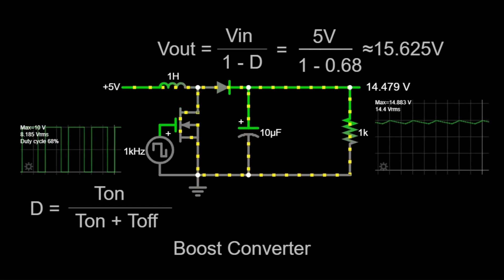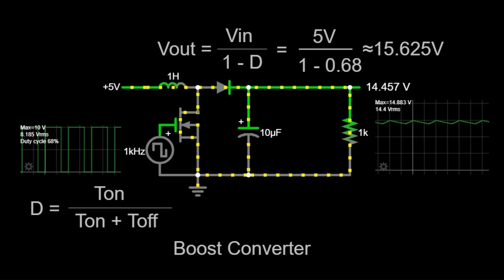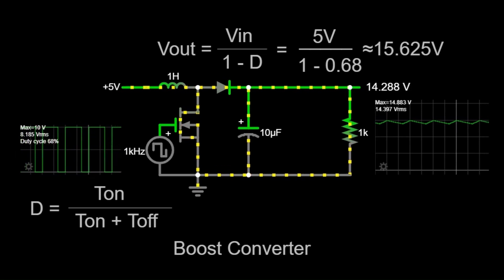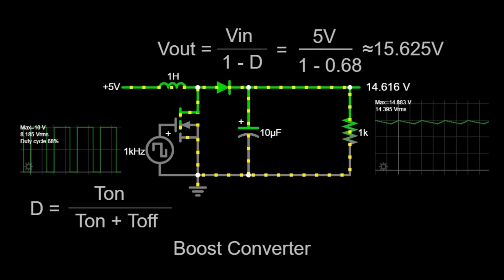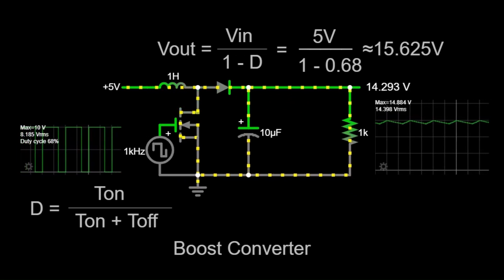Now let's talk about the formula for calculating the output voltage of a boost converter. The output voltage (Vout) is given by the formula: Vout equals Vin divided by 1 minus D, where D is the duty cycle, defined as D equals ton divided by ton plus toff.